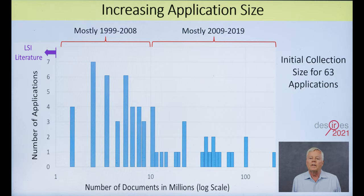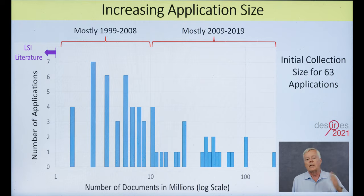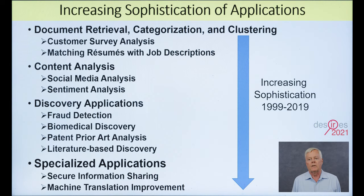This slide shows the sizes of the 63 systems — the sizes of the text collections used to create the LSI indexes — and there's a steady progression in size. On the left-hand side of the graph are systems we built 10 to 20 years ago, which were all single-digit millions of documents. All the systems in the last 10 years are basically in the tens to hundreds of millions of documents. The LSI literature is off to the left on the slide. Over the years I've amassed a collection of over 3,000 technical documents on LSI, and only tens of those would actually even show up on this graph based on the size of the text collections employed.